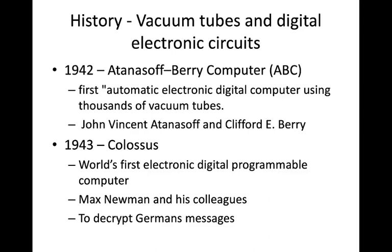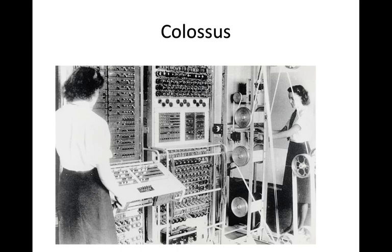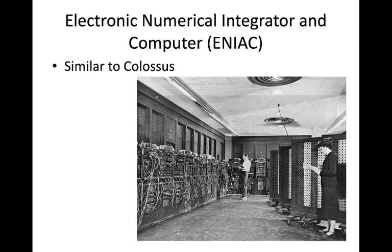This is the Colossus computer — a fully automatic computer. Another computer was ENIAC by the US, Electronic Numeric Integrator and Computer — the first electronic programmable computer built in the US. It was similar to Colossus but much faster and more flexible. You can see how much space it occupied during those days. Then the stored program concept came, designed by John von Neumann, who was the first person to say that programs should be stored and executed. He published this in 1945.